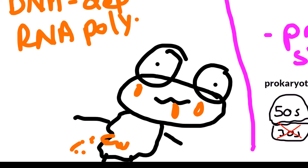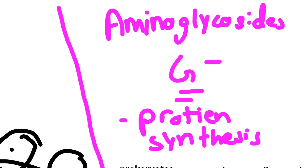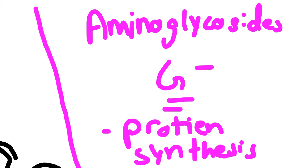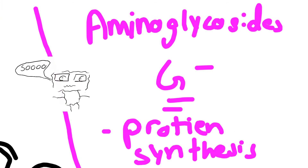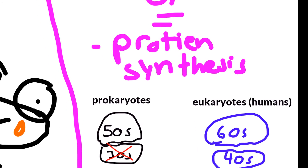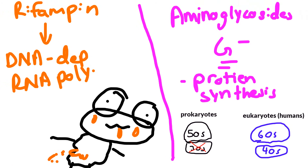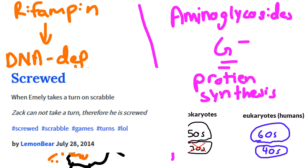Rifampin can turn your body fluids orange, but more importantly monitor liver function tests because it can damage the liver. Aminoglycosides are used to cover gram negatives — they inhibit protein synthesis by disrupting the elongation process at the 30S ribosomal subunit, causing the mRNA to be read incorrectly and producing a non-functional protein.